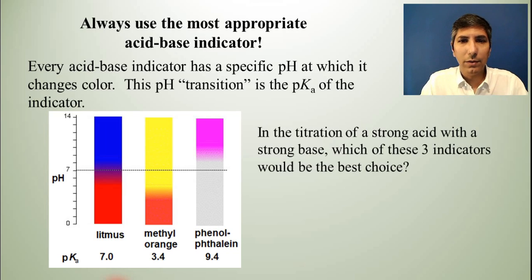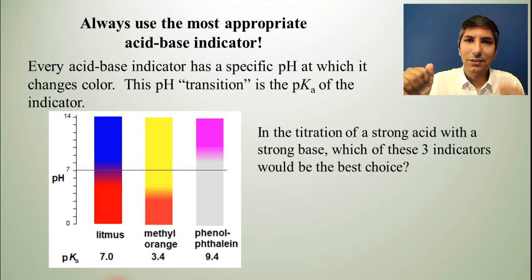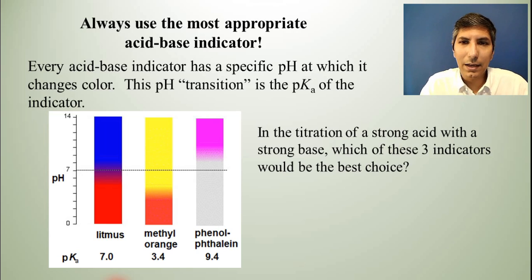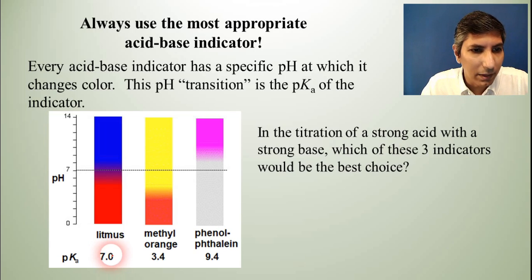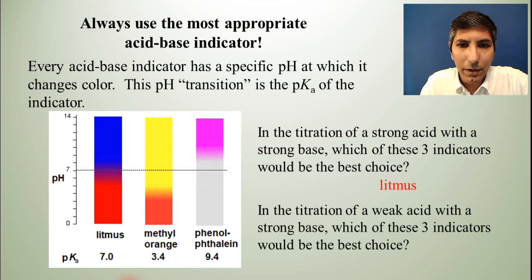Let's imagine that we're trying to titrate a strong acid with a strong base. Which of the three indicators would you choose? A strong acid and a strong base are going to have an equivalence point right in the middle, right at pH 7. So we're looking for an indicator with a pKa of around 7. Litmus is your best choice for that one.